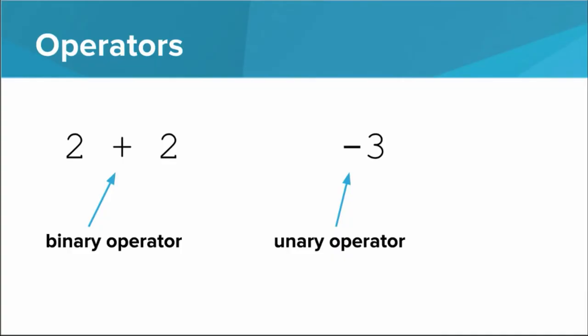The negation operator is an example of what's called a unary operator and that means that it only applies to one thing, whatever is to the right of it. Most of the operators occur between two things, a left side and a right side, and these are called binary operators.